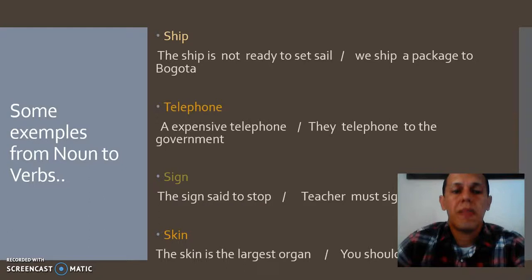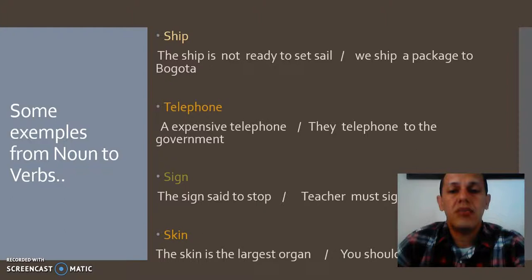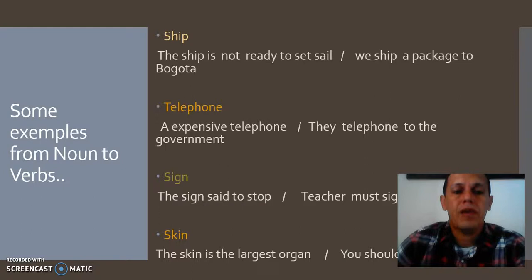Another example with 'telephone.' 'Expensive telephone' — the device is a noun. And the opposite: 'They telephone the government' — 'telephone' is a verb. Then 'sign.' 'The sign said to stop' — as a noun. And 'Teacher must sign the new student' — as a verb.